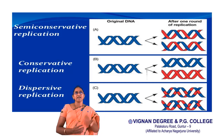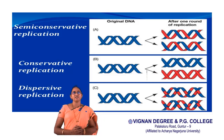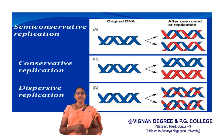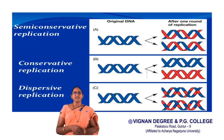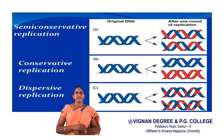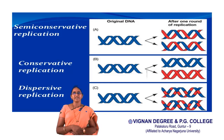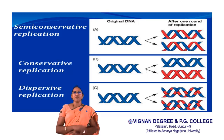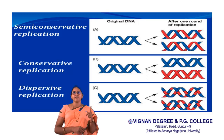Coming to conservative replication: it results in the formation of two DNA molecules, where one DNA molecule consists completely of the original strands and the other DNA molecule contains two newly synthesized daughter strands. So one DNA is completely original and the other DNA is entirely the daughter DNA.